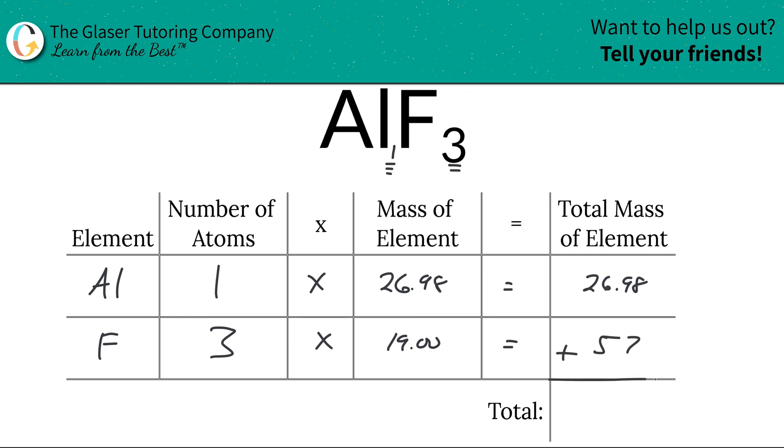Then all we have to simply do is add this column together to find out the total mass of the entire compound. So when we add those two values together, we get a value of about 83.98.